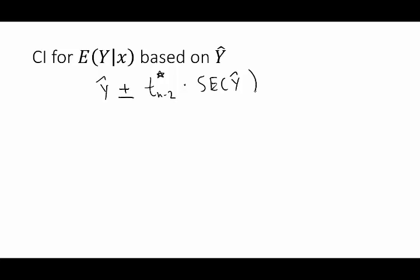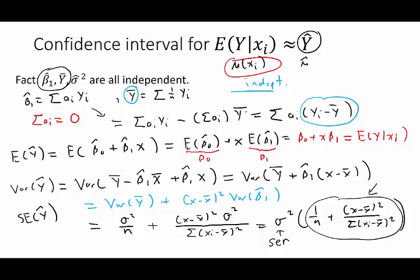Looking at the formula for the standard error, notice that the farther x is from the mean x̄, the larger the standard error will be. That means if x is near x̄, we get very narrow confidence intervals, whereas if x is far from the mean, we get wider confidence intervals. That's why when you plot these you often see a banded structure to the confidence intervals.